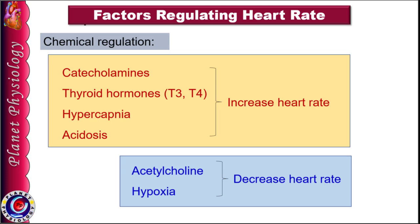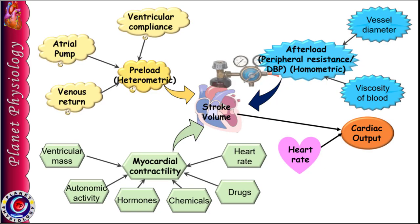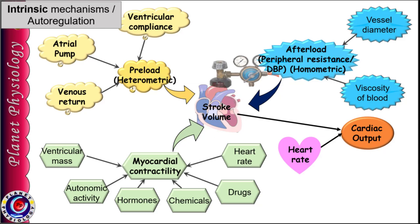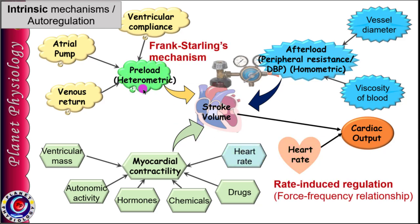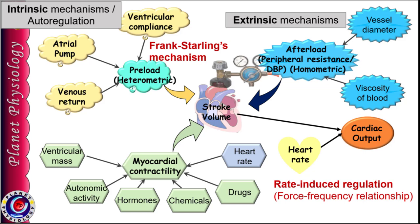Different books discuss regulation of cardiac output in different ways. According to some authors, cardiac output regulation is by two ways: intrinsic regulation and extrinsic regulation. Intrinsic regulation includes Frank-Starling's mechanism (regulation of preload) and rate-induced regulation via force-frequency relationship. Extrinsic regulation includes regulation of afterload, neural regulation, and hormonal regulation. Whichever system you follow, you need to write about all these factors for a complete answer on regulation of cardiac output.